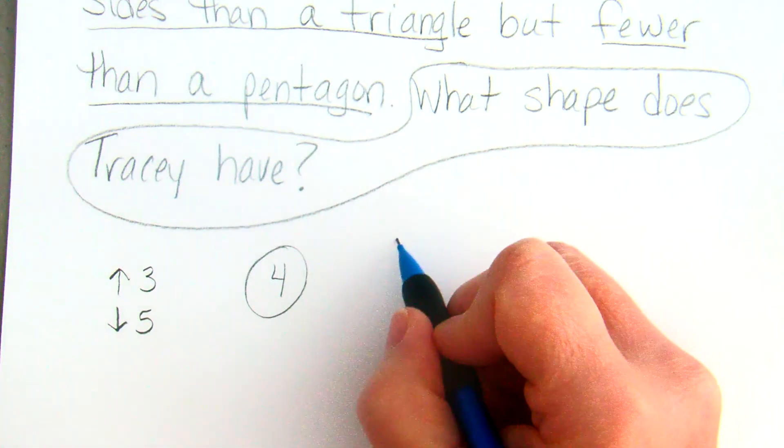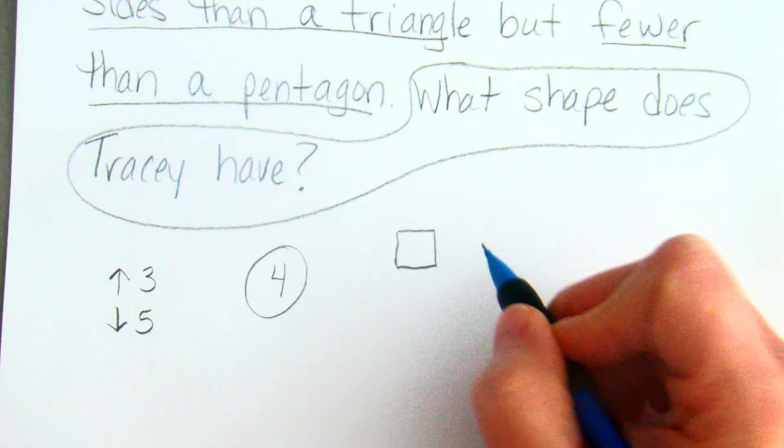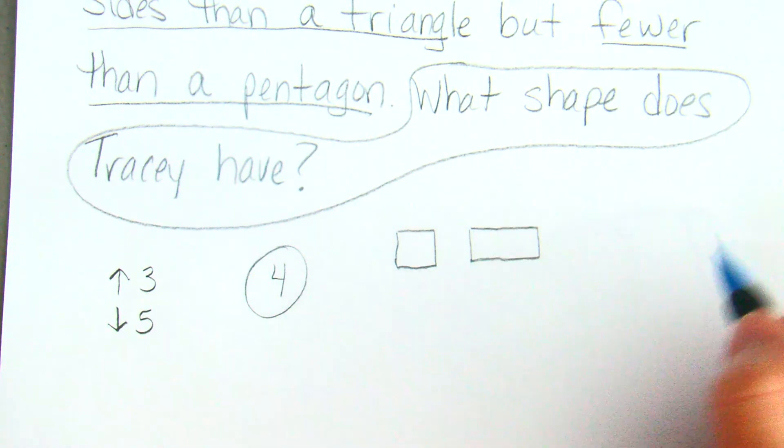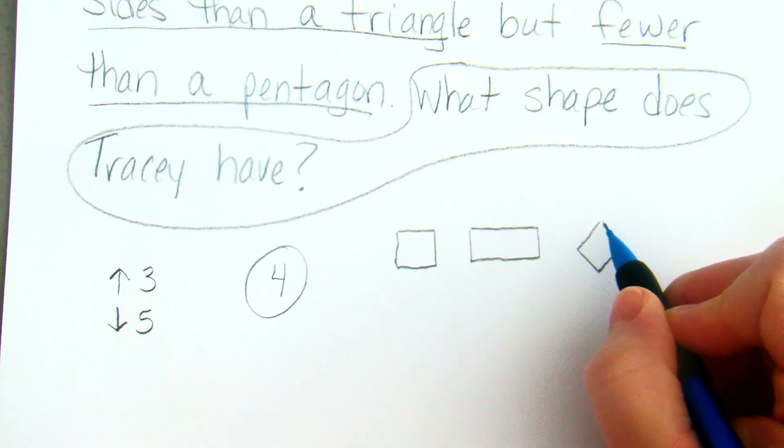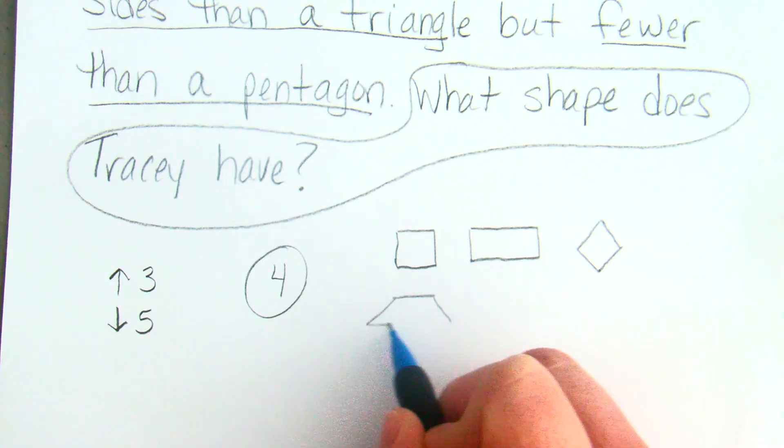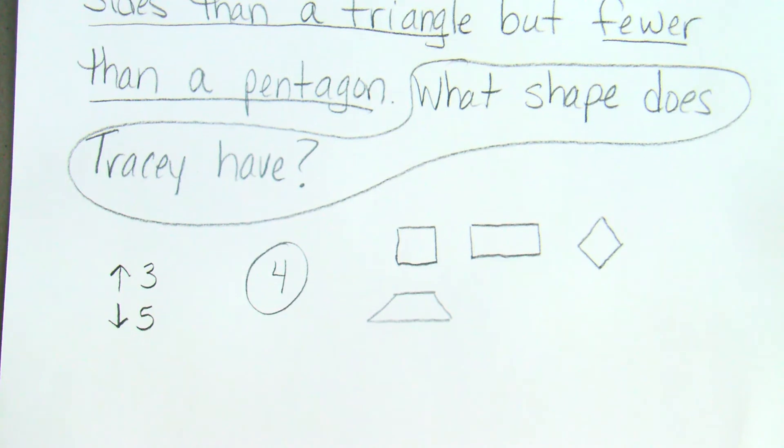Well, that shape could be a square. It could be a rectangle. It could be a diamond. It could be a trapezoid.